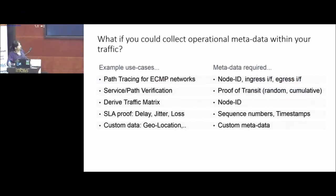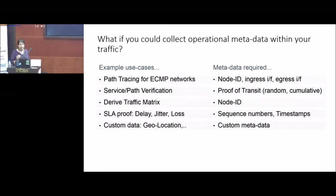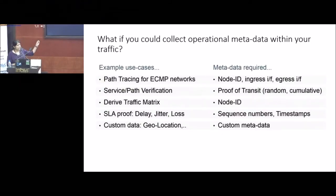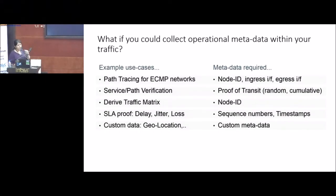Based on some of those use cases, there are a bunch of classes of metadata that you can collect. For tracing the path — to figure out what path a particular actual data packet in your network took — we need information like the node and interfaces that packet traced. That's one set of metadata useful for tracing, particularly when there are multiple paths between source and destination. The next part is about proving that the packet is indeed making through a bunch of virtual or real functions — building some kind of proof of transit inside the packet.